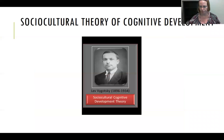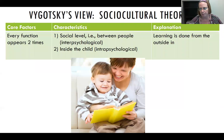Assimilation and accommodation leave us in a good spot to begin talking about our second cognitive theorist, Lev Vygotsky. Vygotsky was not at all concerned about stages of development; rather, he believed that children learn through interaction. Starting with the next slide, we will talk in more detail about his view of cognitive development.